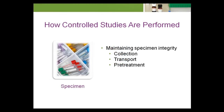Maintaining specimen integrity by keeping specimen collection, transport, and pretreatment processes consistent is crucial. The timing of collection is particularly important for analytes that exhibit documented patterns of change based on circadian rhythms, sleep-wake cycles, monthly cycles, and seasonal rhythms. As previously mentioned in this course, transport of the specimen in a timely manner and at the correct temperature is important in preserving specimen integrity.